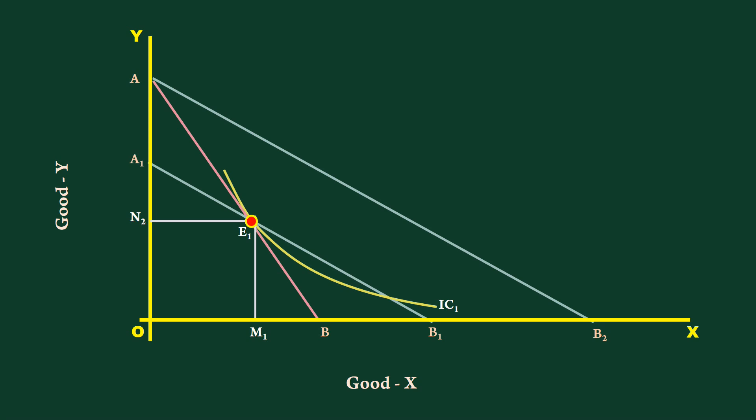He cannot be in equilibrium at any point in the segment E1A1 because it will place him on a lower indifference curve. He can be in equilibrium only in the segment that lies below E1.